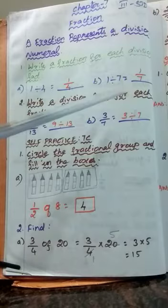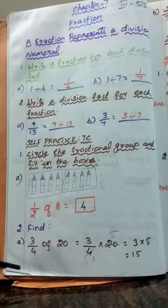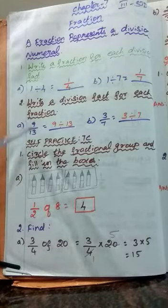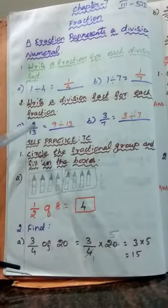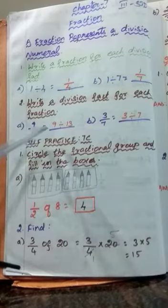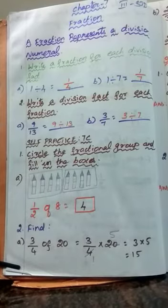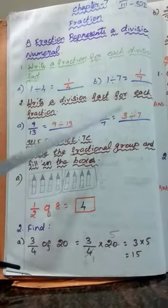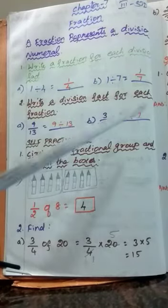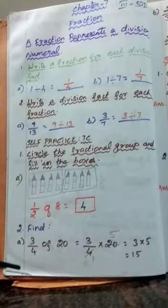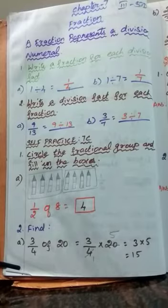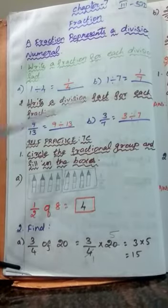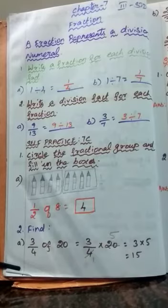Second question: write a division fact for each fraction. So a fraction is given, and from the fraction you have to write the division fact. The first question is 9 by 13. You remove that bar and write the division symbol, so it becomes 9 divided by 13. Then, for 3 by 7, you write 3 divided by 7. This is the method of writing a division fact for a given fraction.